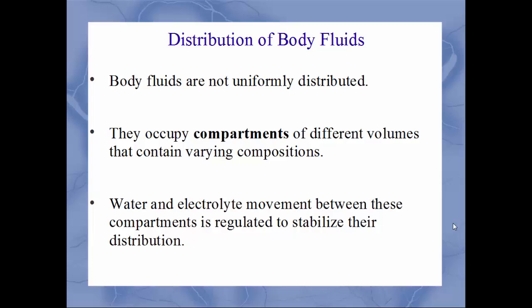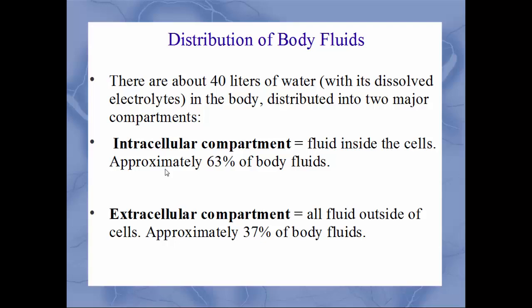Next we'll talk about the distribution of body fluids. Fluids in your body are not uniformly distributed — there are varying levels of fluid in different locations, occupying various compartments of different volumes. Water and electrolyte movement between these compartments has to be regulated fairly tightly to stabilize distribution. Within the body you have roughly 40 liters of water and dissolved electrolytes.